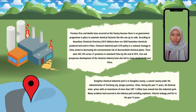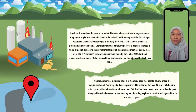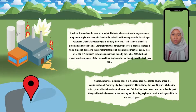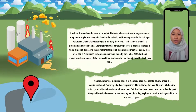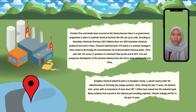First of all, we start with the introduction. Previous fires and deaths have occurred at this factory because there is no government program in place to maintain chemical factories like this one. According to the Hazardous Chemicals Directory 2015 edition, there are 2,828 hazardous chemicals produced and used in China.